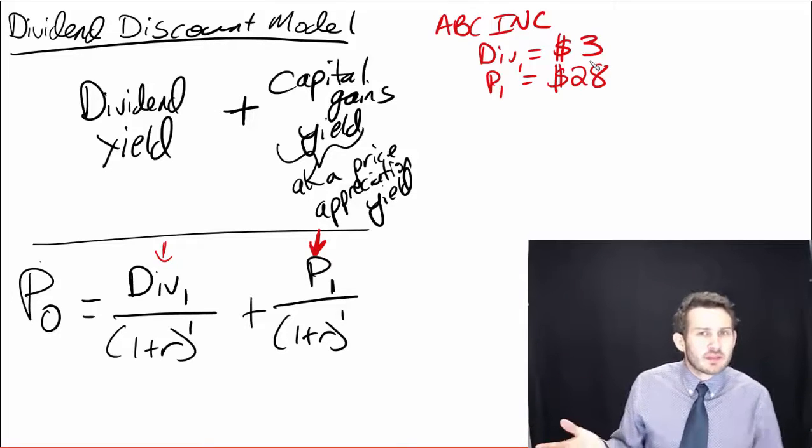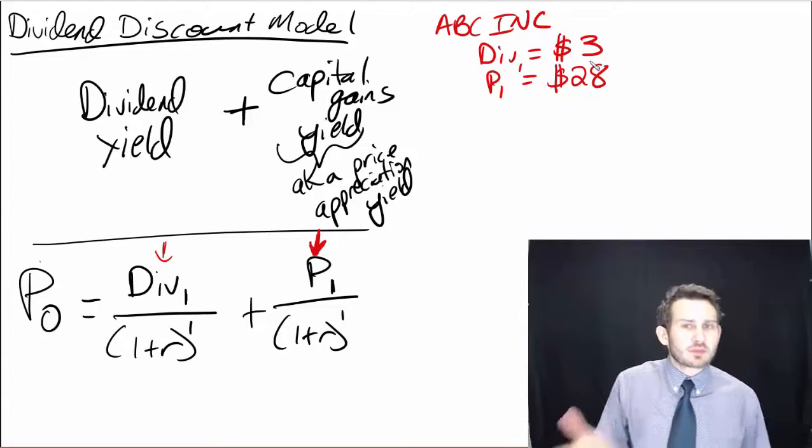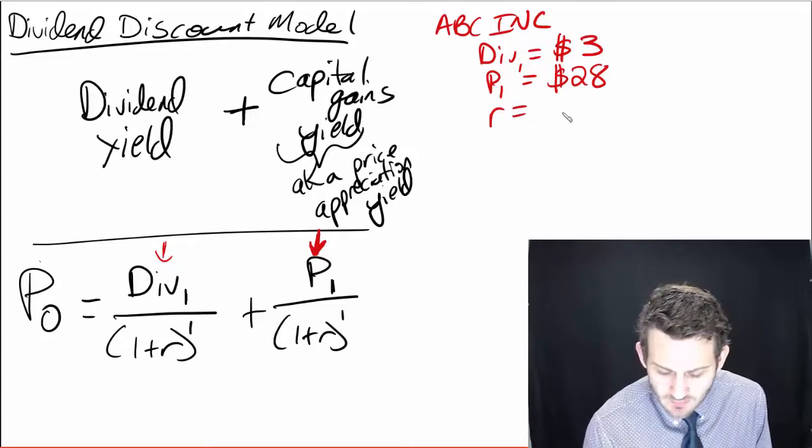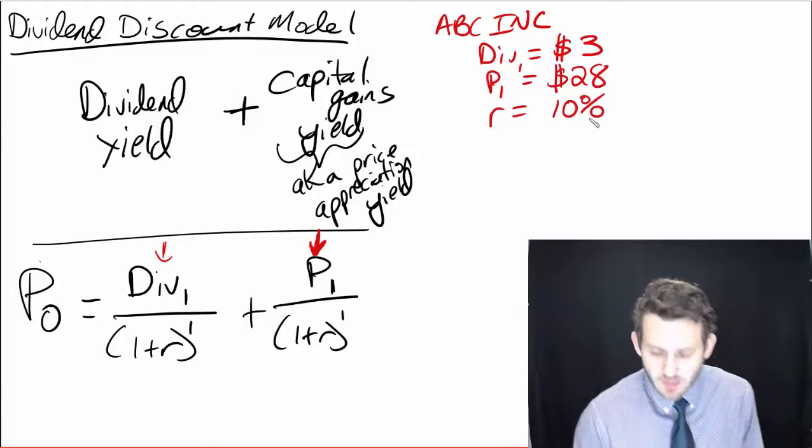Now, given the relative riskiness of the stock, because we know that the riskier the stock is, the higher my required return is going to be. Let's say that R is, say, 10%.